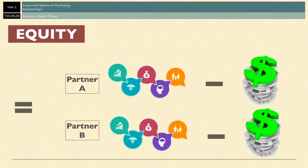It doesn't matter that they both have to put in the same and get out the same, but what they're left with has to be roughly the same. And, just like with Social Exchange Theory, the concept of costs and rewards are very subjective to each individual partner, and I'll come on to an example of that a little bit later on.